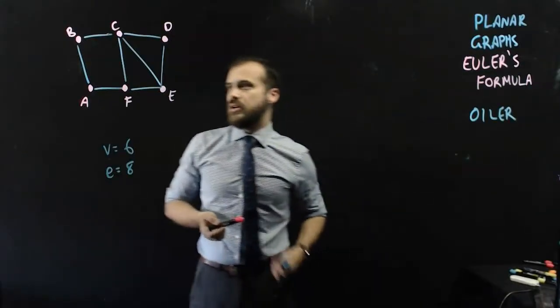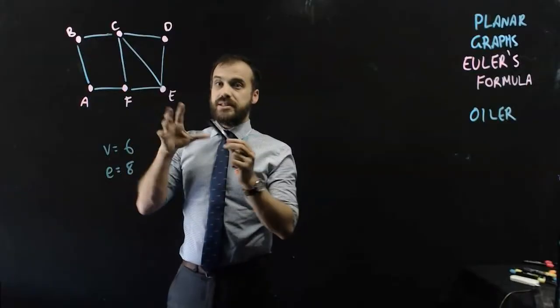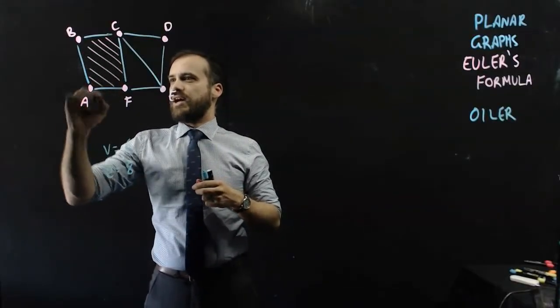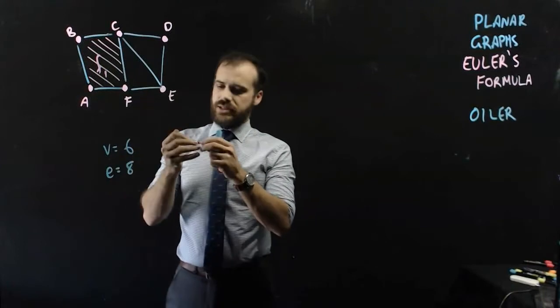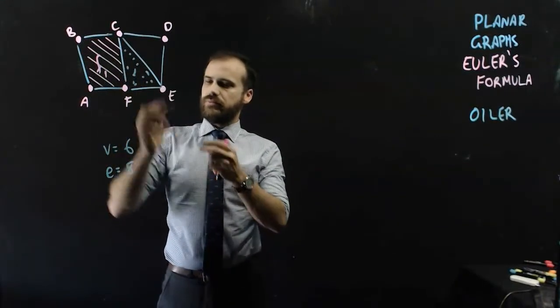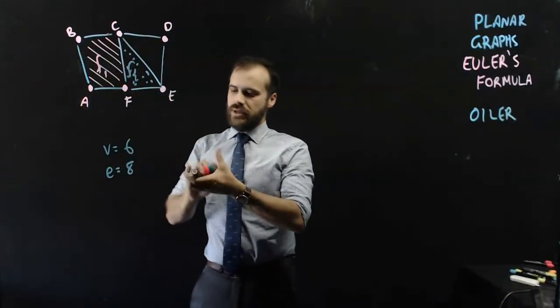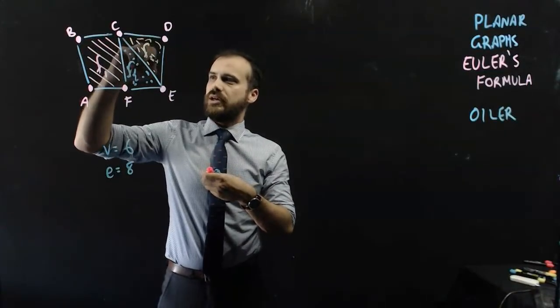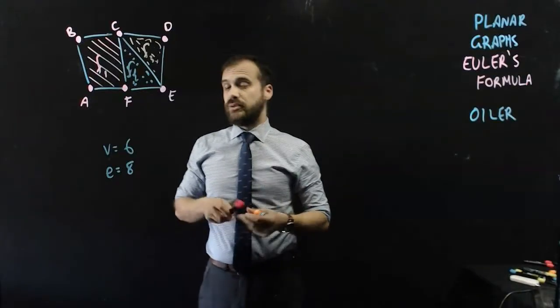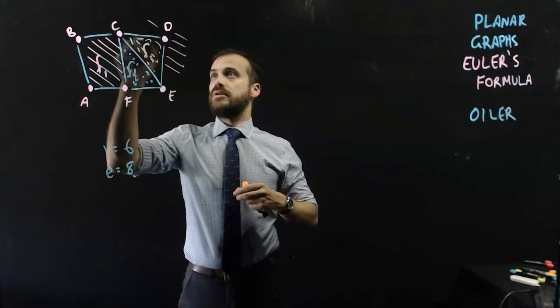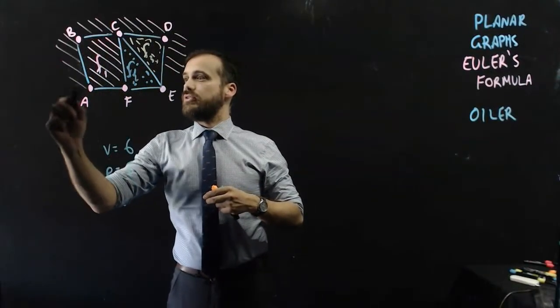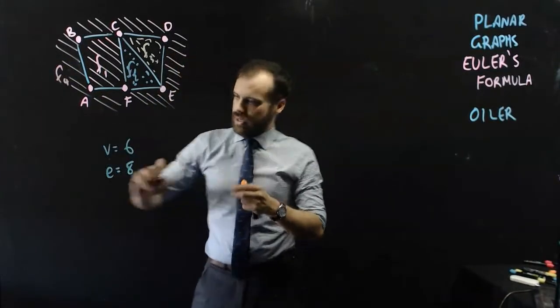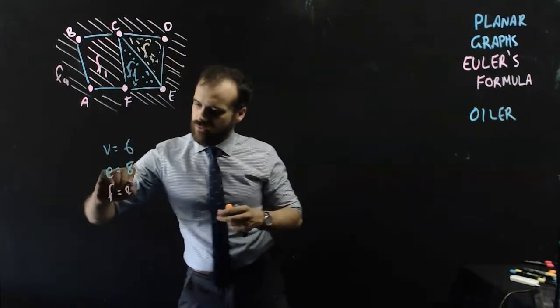And then I'm going to count something that Euler called the faces. Now what did he mean by faces? Well, he looked at all of the bits that were, I guess, the paddocks if you were a farmer. So this is a face, we'll call that face one. This bit here is a face, we'll call that face two. This bit here, I'm thinking you can guess, is a face, we'll call that face three. And you might think there's three faces here, but actually we need to count the fourth face, which is the face all around the planar graph. And we'll call that face four. Okay, and then we have F equals four.